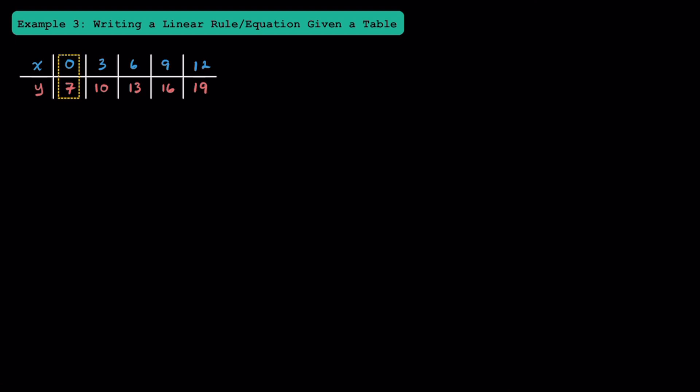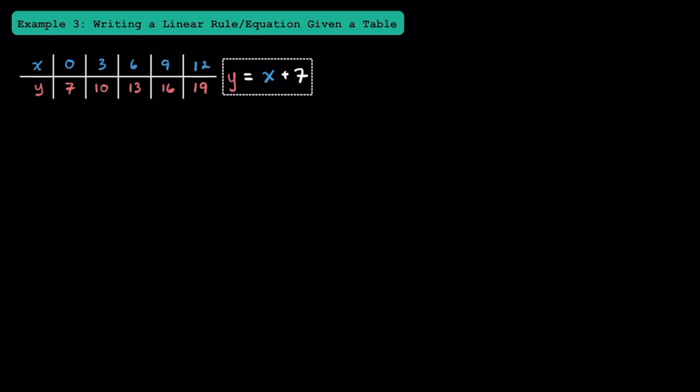However, to be a rule, it needs to work for every pair of values in this table. Seeing as how 3 plus 7 is also equal to 10, this checks out. Now that you can see that all the y values are 7 more than their corresponding x values, we can write the equation that y is equal to x plus 7. This is the linear equation, or the rule, that fits this table.